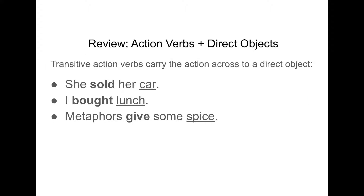One common sentence structure we looked at was an action verb followed by a direct object. Transitive action verbs carry the action across to a direct object. So: she sold her car, I bought lunch, metaphors gave some spice. In each of these cases, you could ask sold what, bought what, or give what? It's the noun after the verb that answers that question — what or who.